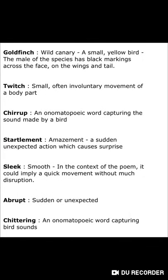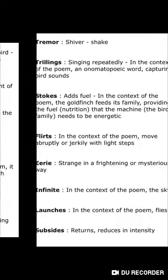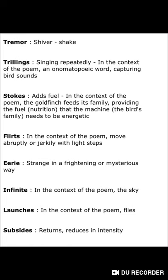Word meanings — goldfinch: wild canary, एक small yellow bird है, जो male species में black markings होती है इसके face के around, wings और tail होती है. Twitch: small, often involuntary movement of body parts. Chirrups: bird sounds. Startlement: amazement or sudden unexpected movement. Sleek: smooth. Abrupt: sudden or unexpected. Chitterings: bird sounds. Tremor: shiver, shake. Trillings: singing rapidly. Stokes: खाना भर कर मुँह में लेकर आना, to feed young ones. Flirt: move abruptly. Eerie: strange, mysterious. Infinite in the poem refers to sky. Launches means fly. Subsides means return.